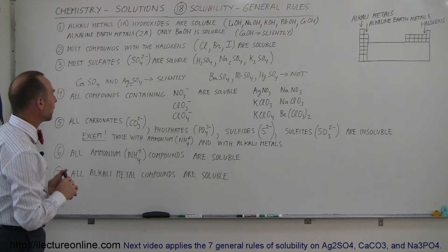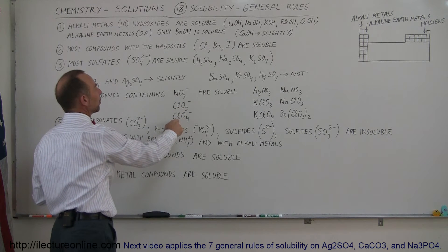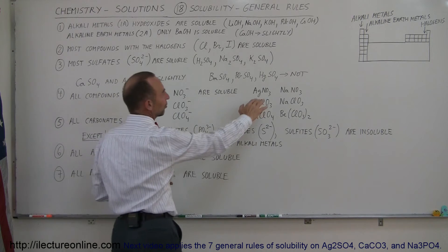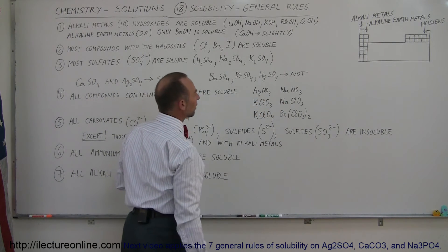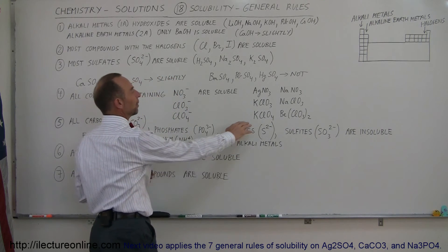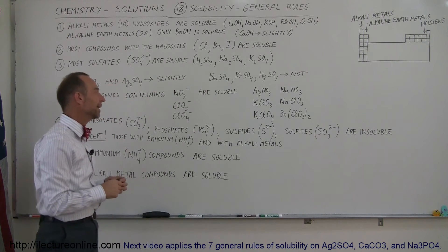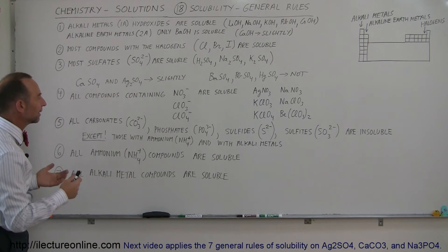Alright, on the compounds containing the nitrate ion, the chlorate ion, and the perchlorate ion, they're all soluble. So, here's some examples. Silver nitrate, sodium nitrate, that's soluble. Potassium chloride and sodium chloride is soluble. And potassium perchlorate and beryllium perchlorate is also soluble. So, anything mixed with the nitrate, the chlorate, and the perchlorate ion, they tend to be soluble.